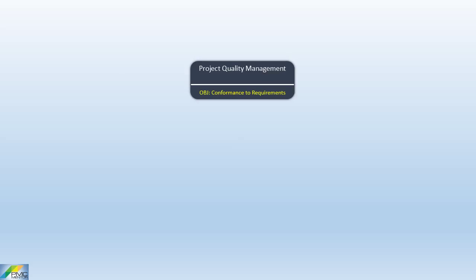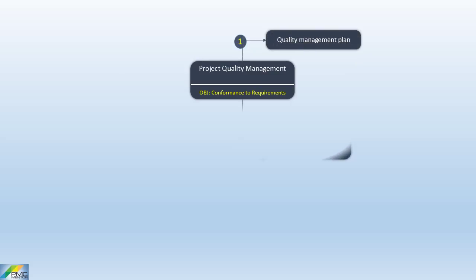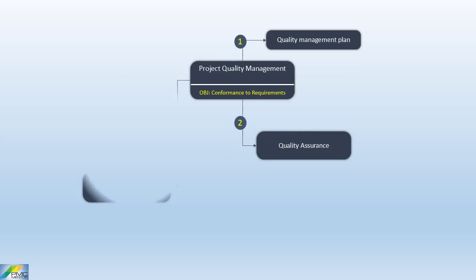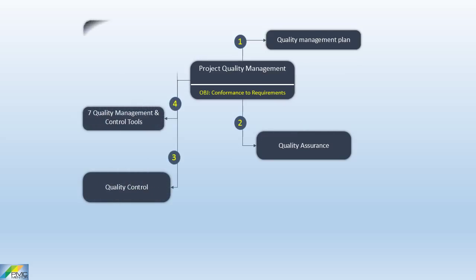There are five key concepts in quality management. These are: quality management plan, quality assurance, quality control, seven basic quality tools, and seven quality management and control tools.